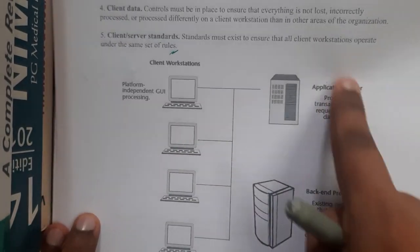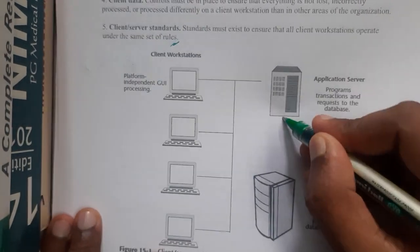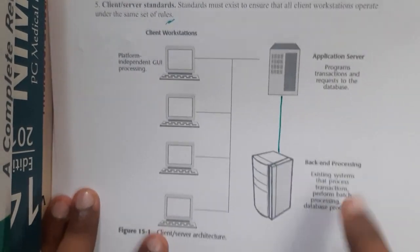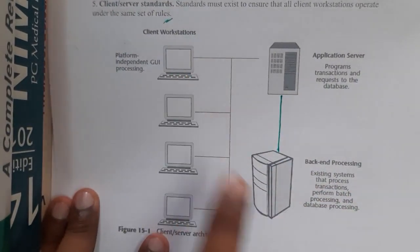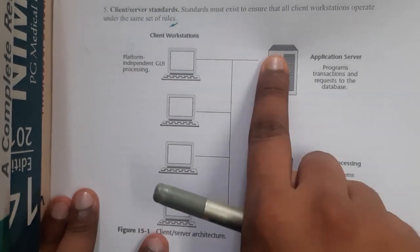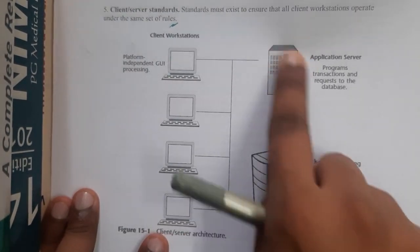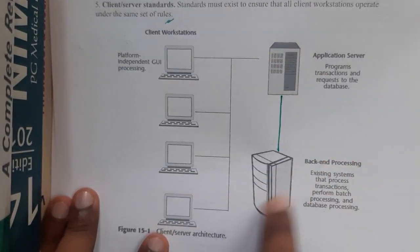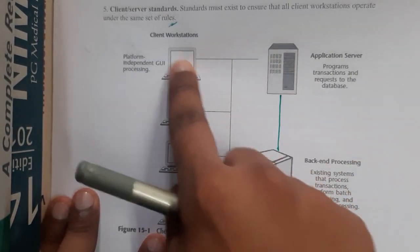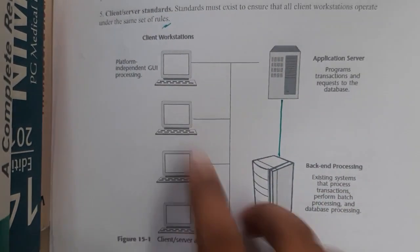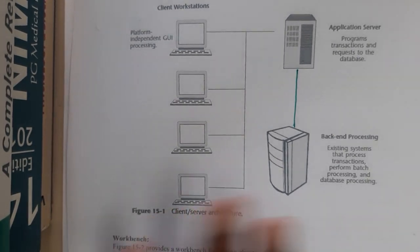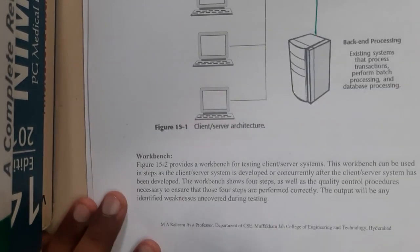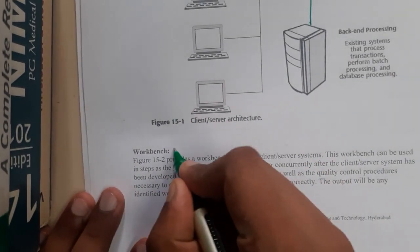You can draw a small diagram showing client machines connected to an application server, which in turn is connected to the back end. When you want to open a web page, the request goes to the application server; if the data is not there, it goes to the back end, which responds and displays it on your screen. This is how a client-server architecture works.